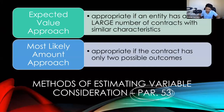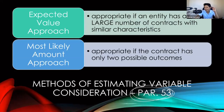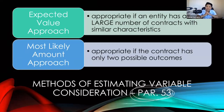The expected value approach is appropriate if an entity has a large number of contracts with similar characteristics. The most likely amount approach is appropriate if the contract has only two possible outcomes. However, if the problem specifies which method to use, always follow what the problem says — that is the first rule. Use the method required by the problem.